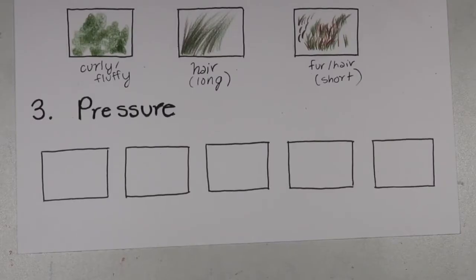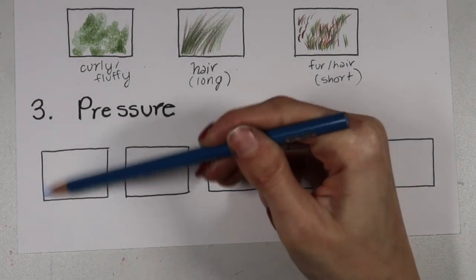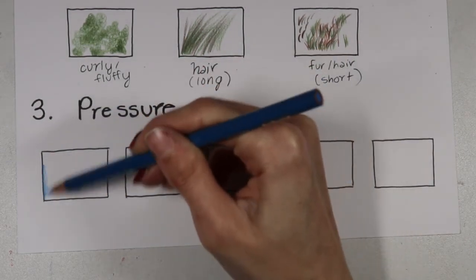Now let's talk about pencil pressure. So this is very important because if you are using different pressure across one area, then you're not going to get a very even result. And you also have to pay attention with the type of pressure you're using while you're coloring. In the first box, I'm going to show you what uneven pressure looks like.